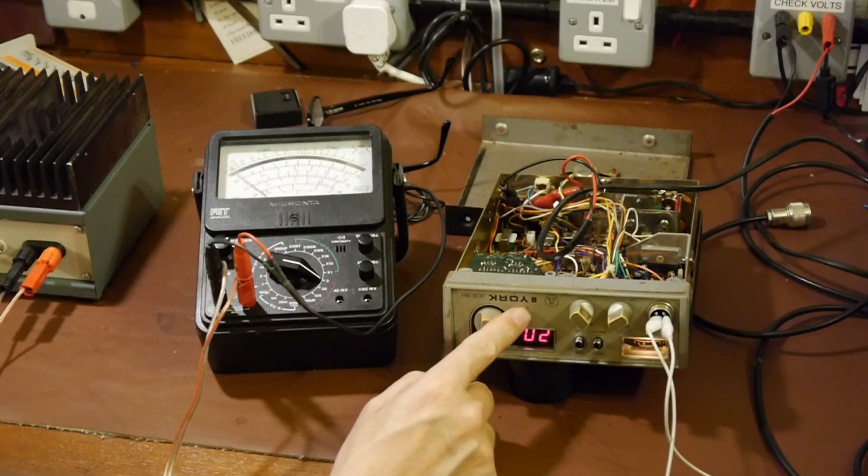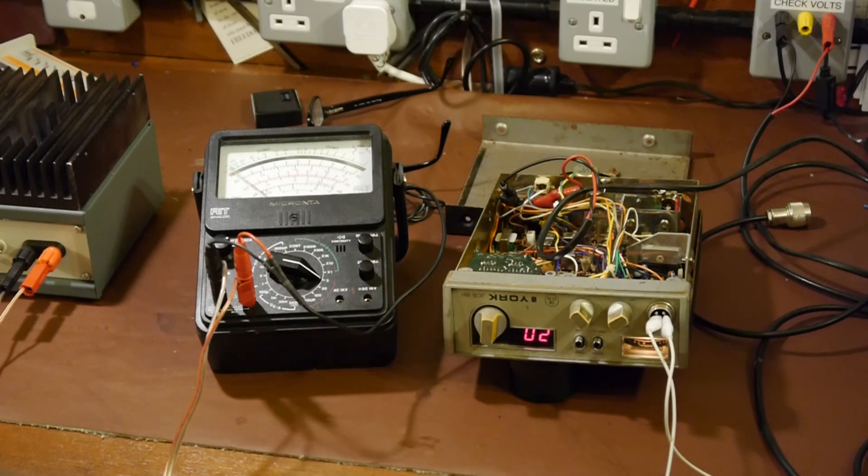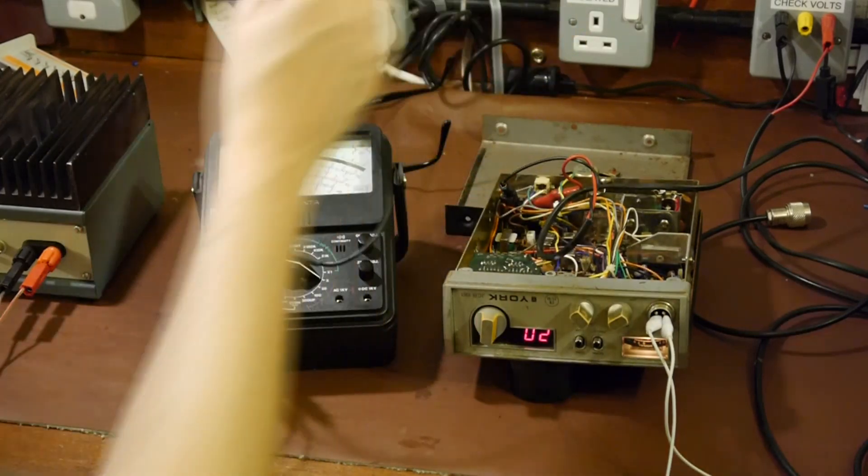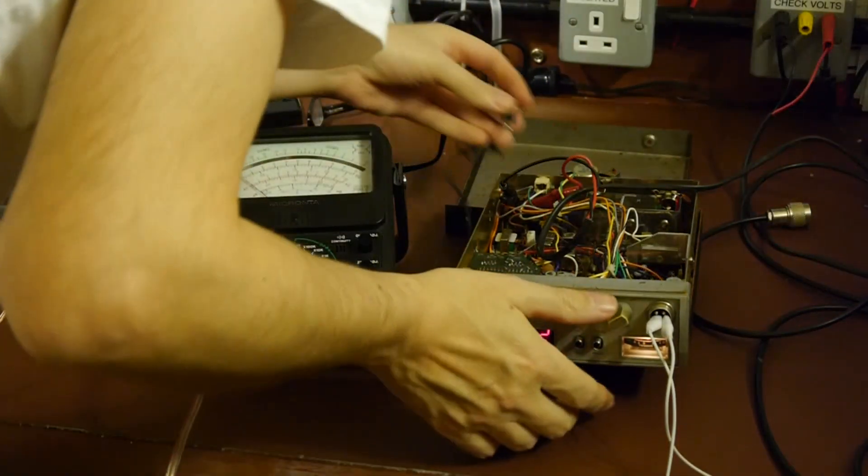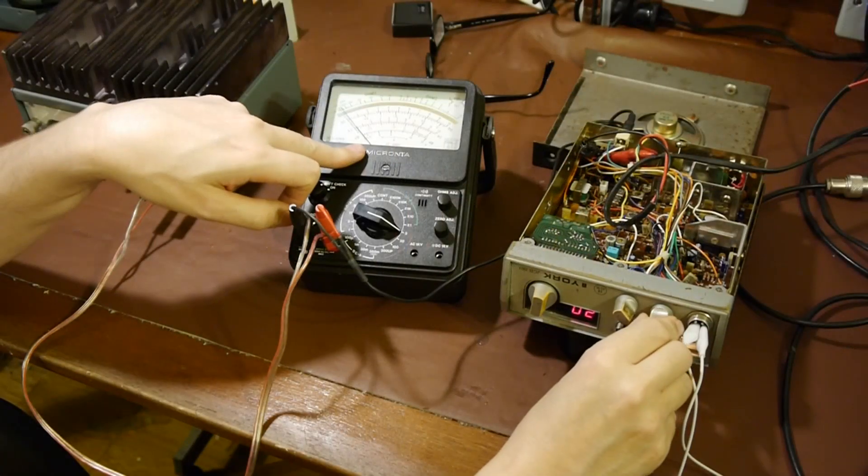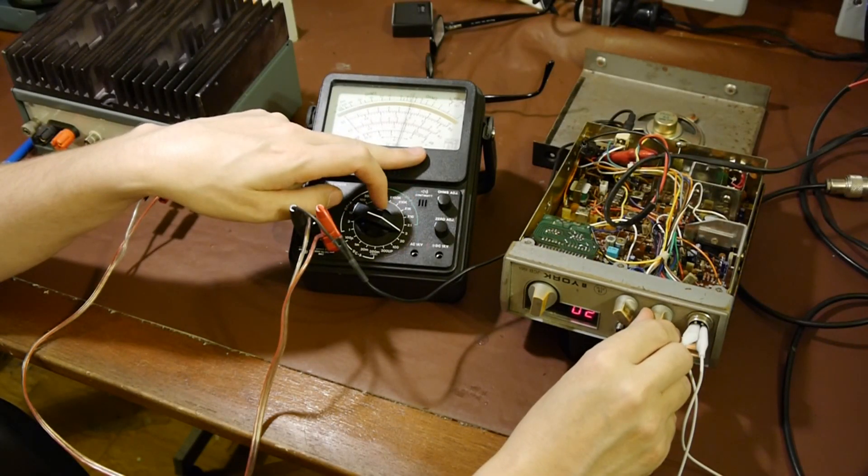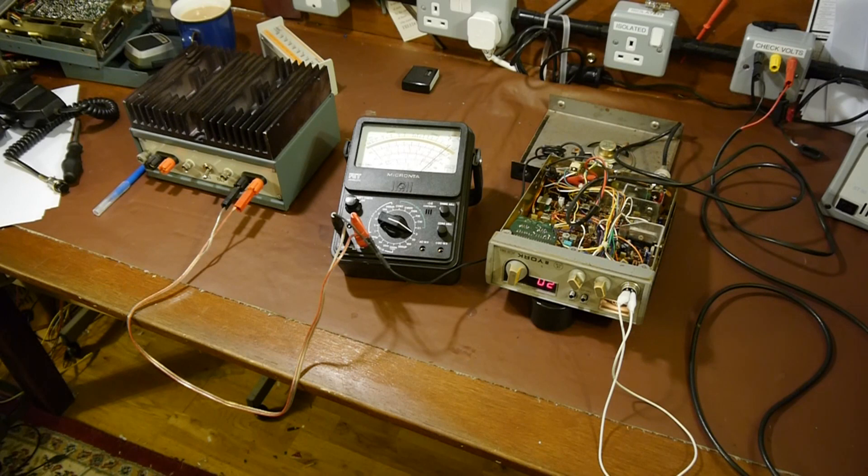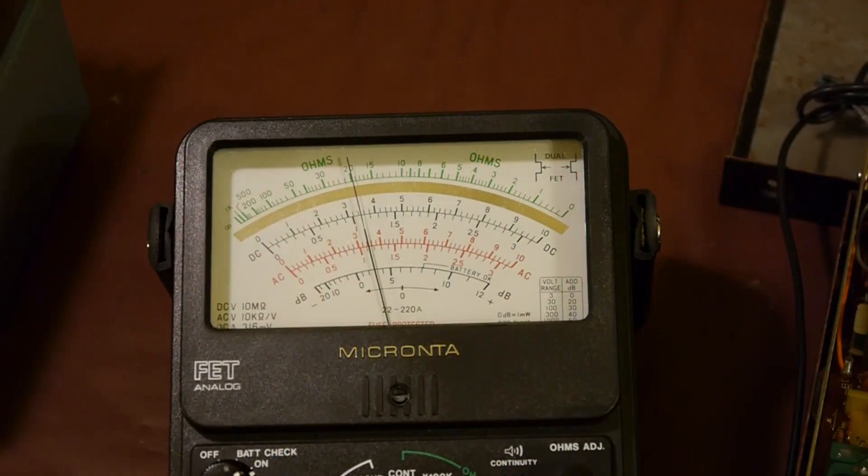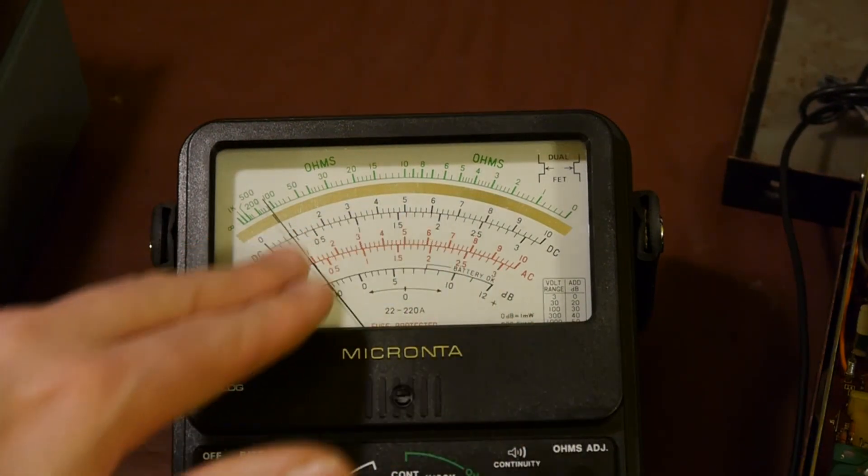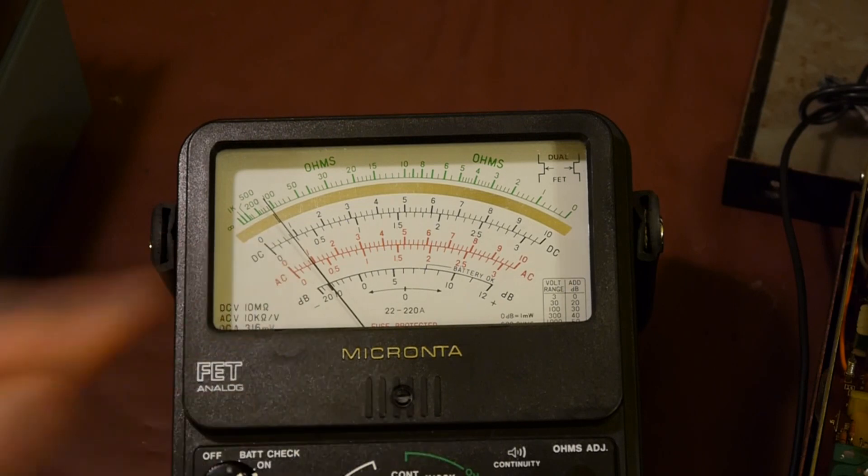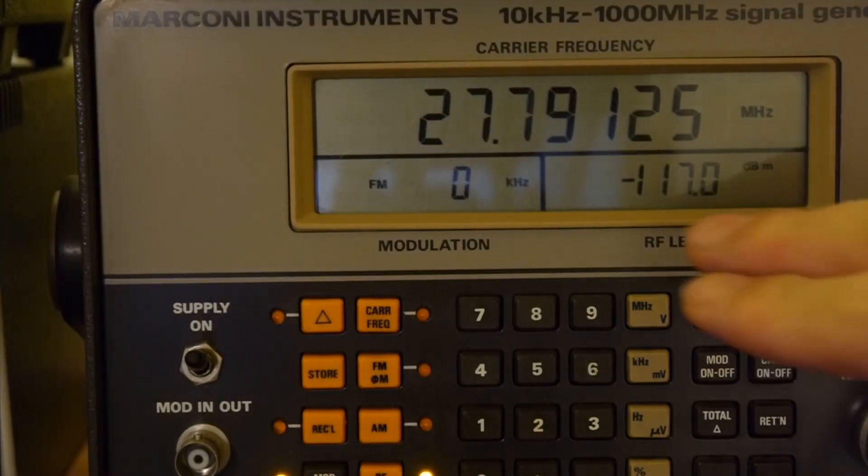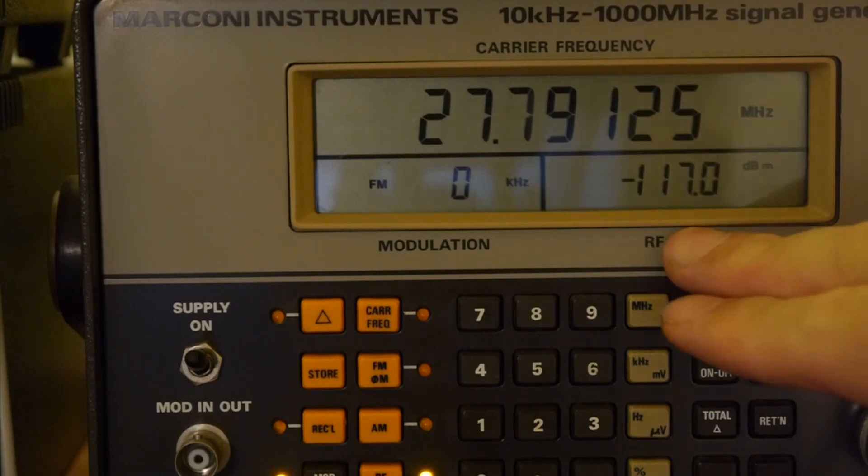And next on the bench we've got this York JCB861 CB transceiver. Let's just plug the speaker connection in. And we need to turn the volume up again to achieve our 3V. So let's do that. So let's have another go at increasing our carrier signal level. So we've gone there from 3V to 0.3V which is our minus 20 dB. And to produce that quietening effect we needed minus 117 dBm. So let's write that down.